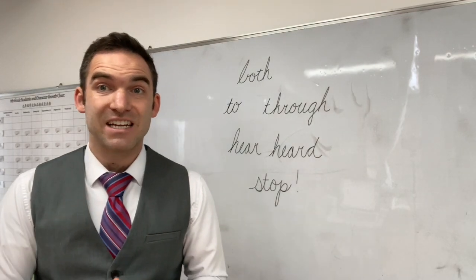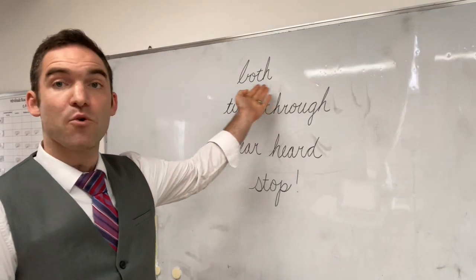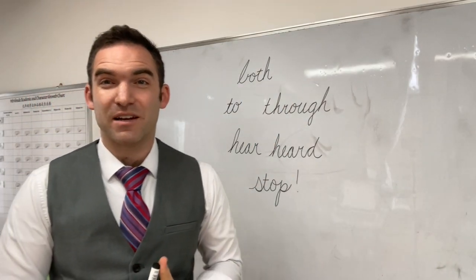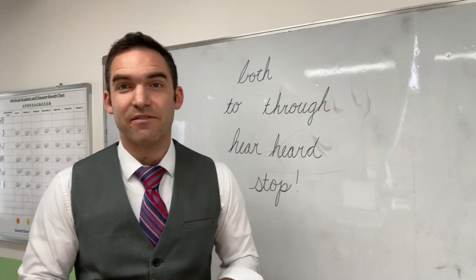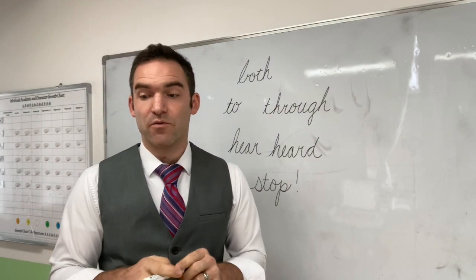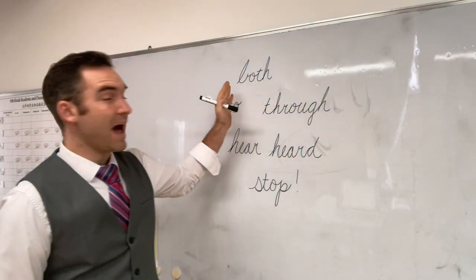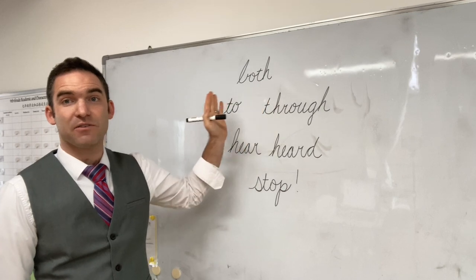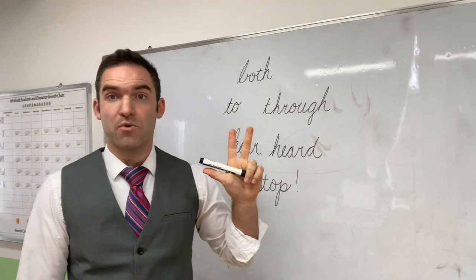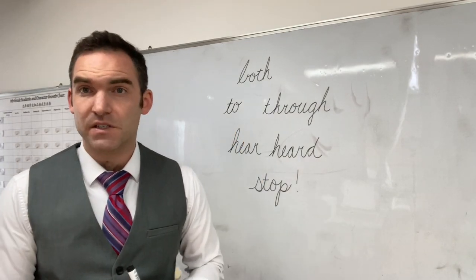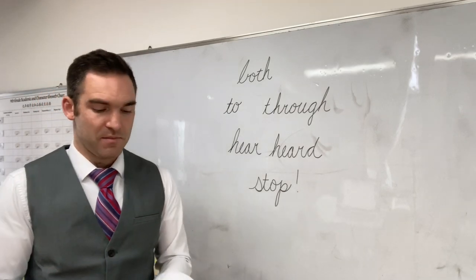Single-letter graphemes may make more than one sound. I want to use the word 'both' as an example. Working from left to right, how many sounds do we have? We have b, o, th — that's three sounds. Because we have four letters but only three phonemes, I know we're going to have at least one multiletter grapheme here.